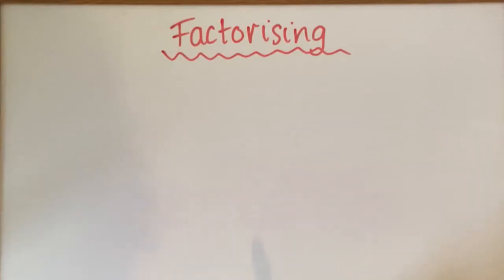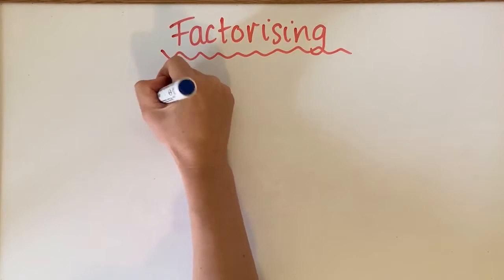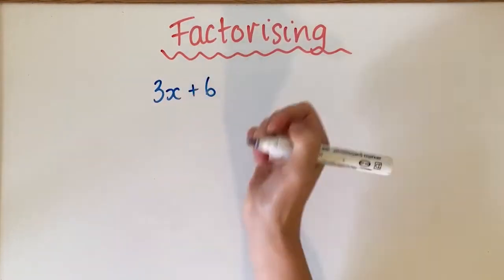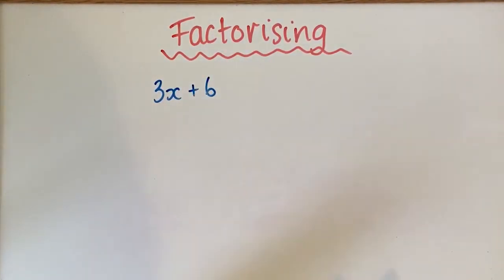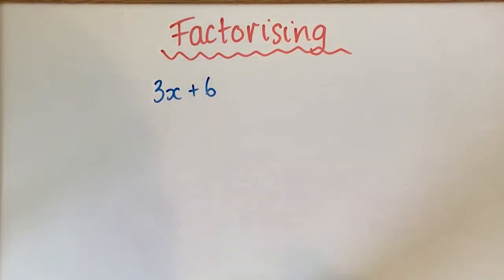Factorizing is when you have an expression that doesn't have brackets and you're trying to put it into brackets. So 3x plus 6 is an expression without brackets, and we want to put it into brackets. The first step is to try and find the highest common factor.